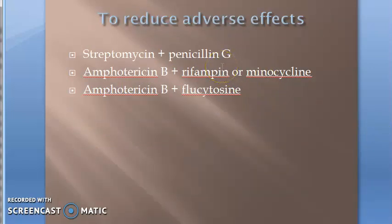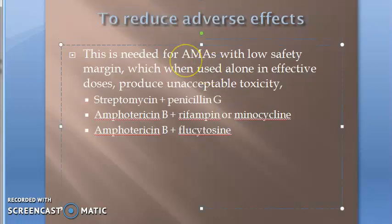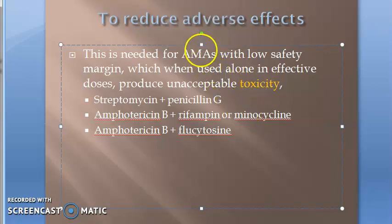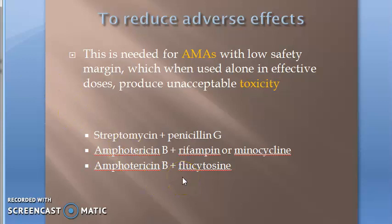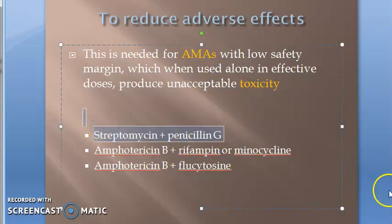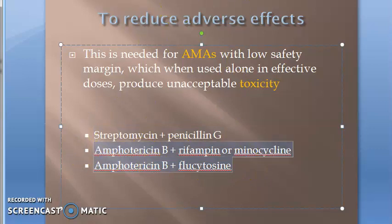The second objective is to reduce adverse effects. Some antimicrobial agents have unacceptable toxicity. If you combine them with other antimicrobial agents, you need lesser quantity of the toxic agent. An example is combining streptomycin with penicillin G — a bactericidal-bactericidal combination. Rifampicin is commonly combined with many other agents.